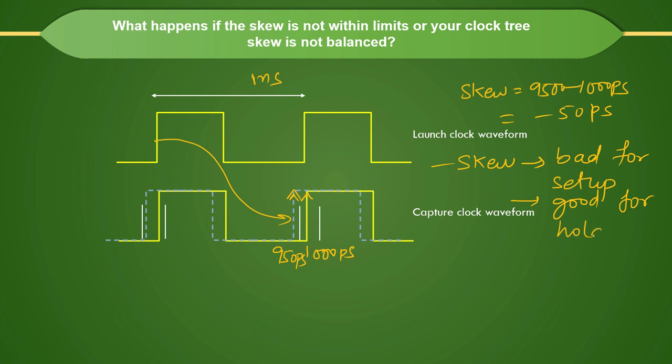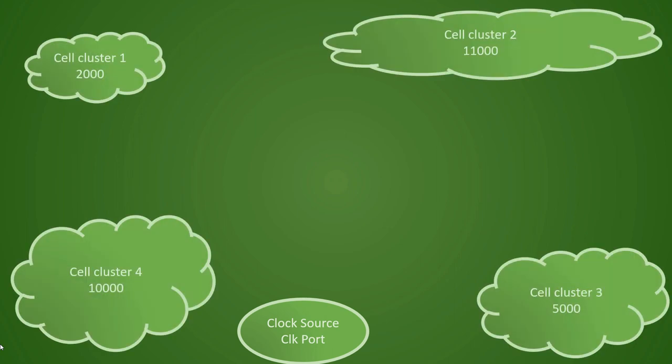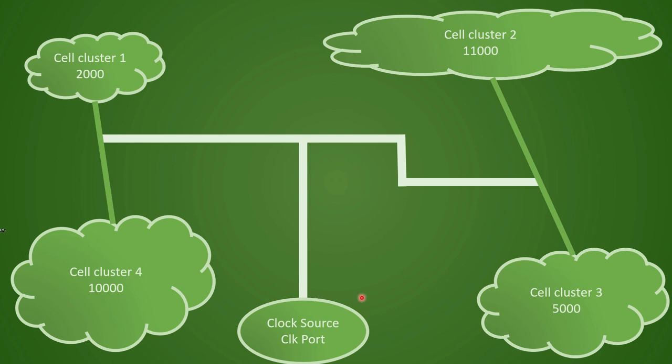Let us revisit the example to understand latency and skew balancing further. In reality, you will not have uniform segregation of hierarchy. In fact, it will be something like this in which you will have one hierarchy having more cells compared to another. You can see that in this hierarchy there are 10,000 cells, here it is 11,000 cells, but another hierarchy has 5,000 and one more has just 2,000 cells. Hence, the clock source will see non-uniform loading at the top level. The clock tree sometimes might not even look like a uniform H-tree, but it will be having one arm longer than the other and sometimes more loaded than the other depending on the design.